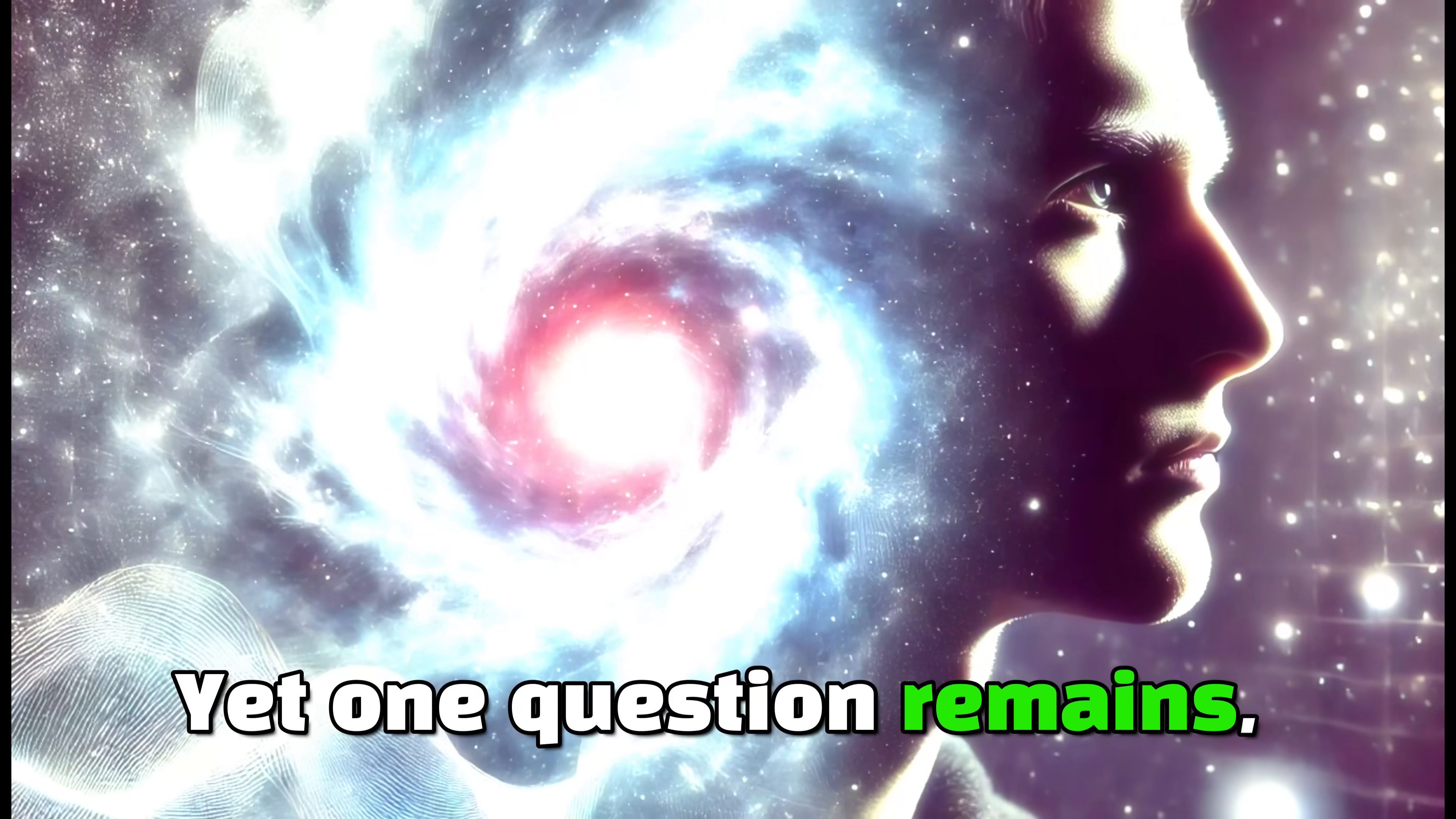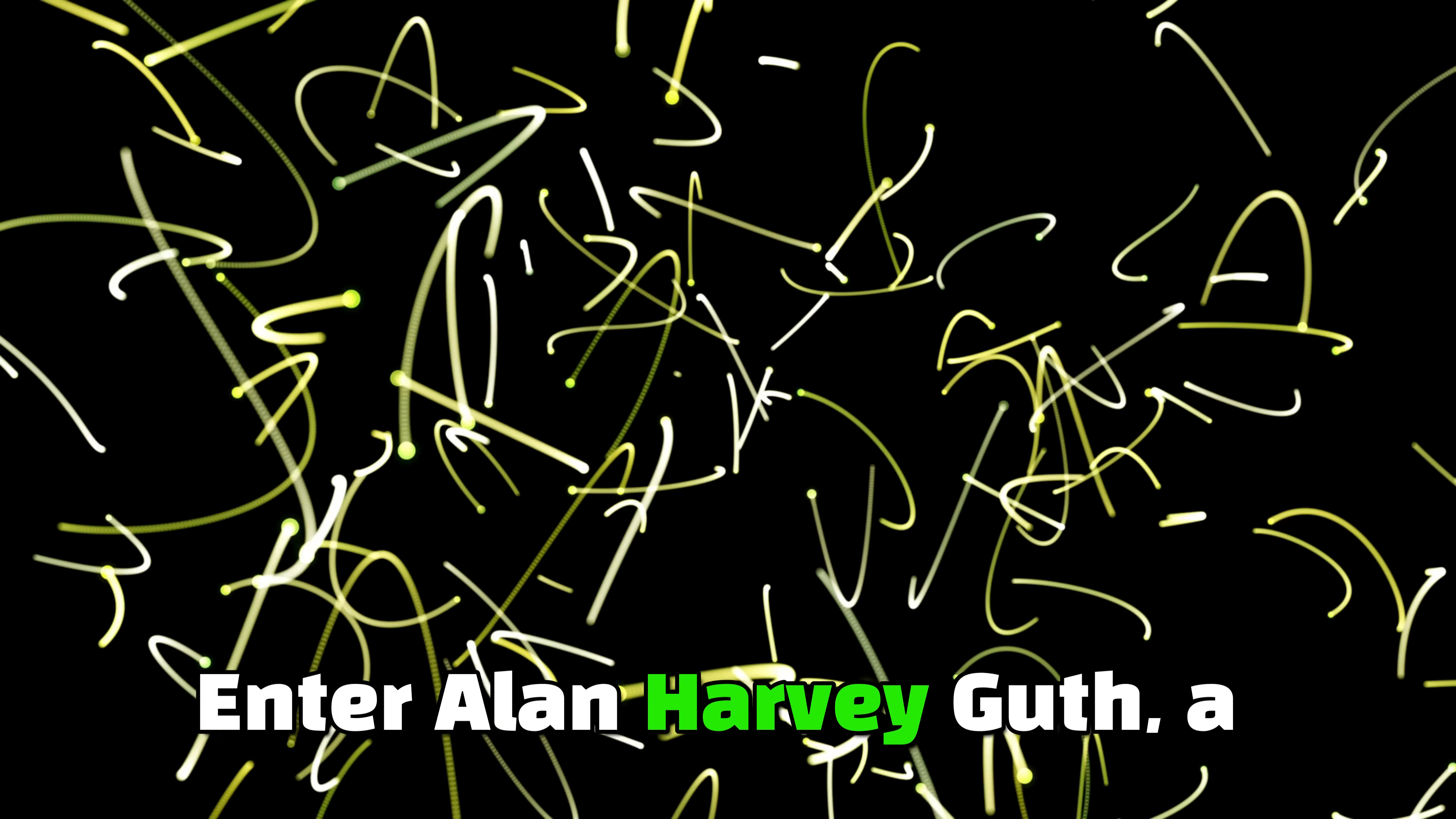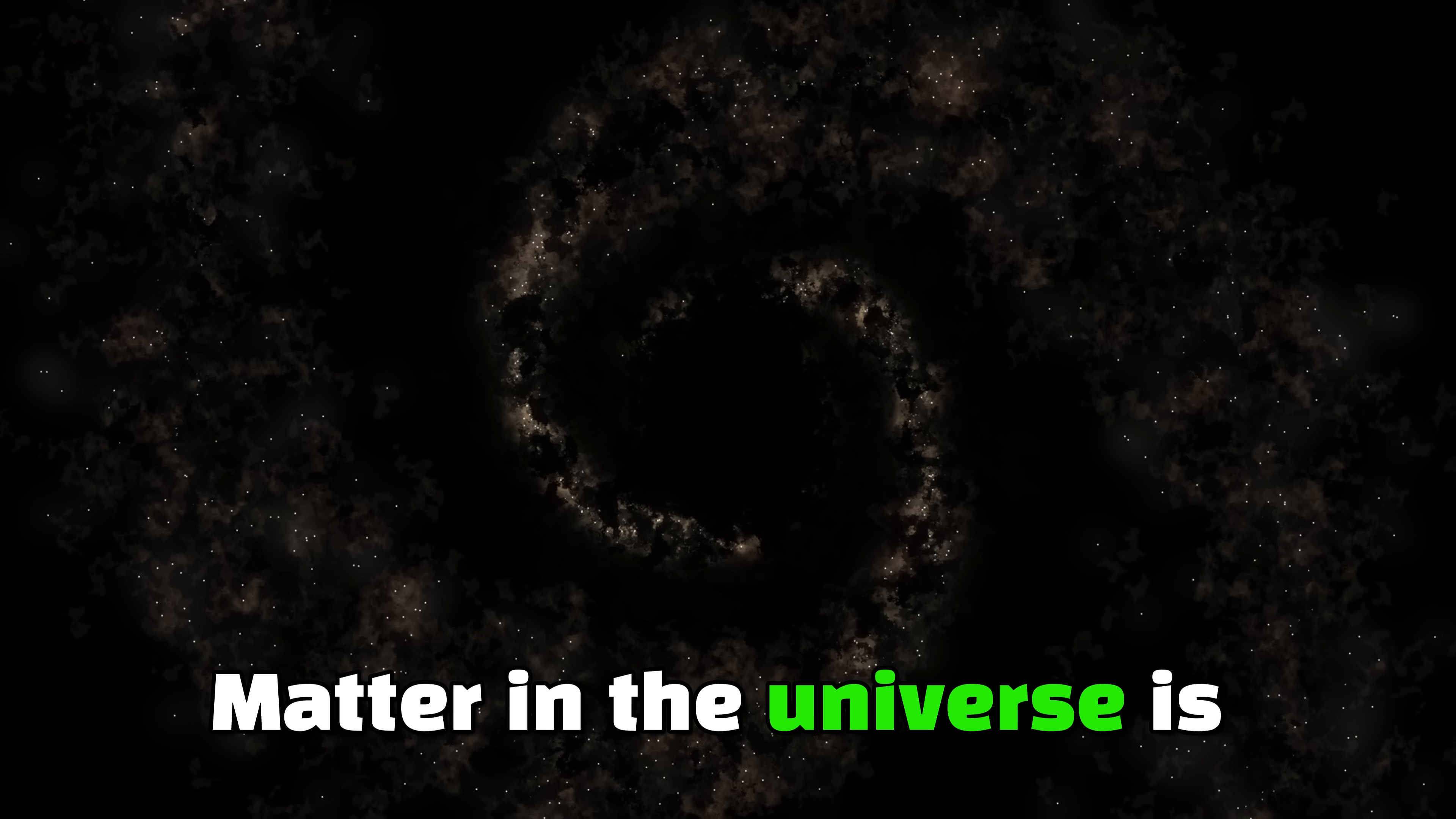Yet one question remains: what was before the Big Bang? This is where things get even more intriguing. Enter Alan Harvey Guth, a renowned physicist who noticed some problems with the Big Bang theory. For instance, matter in the universe is distributed quite evenly.